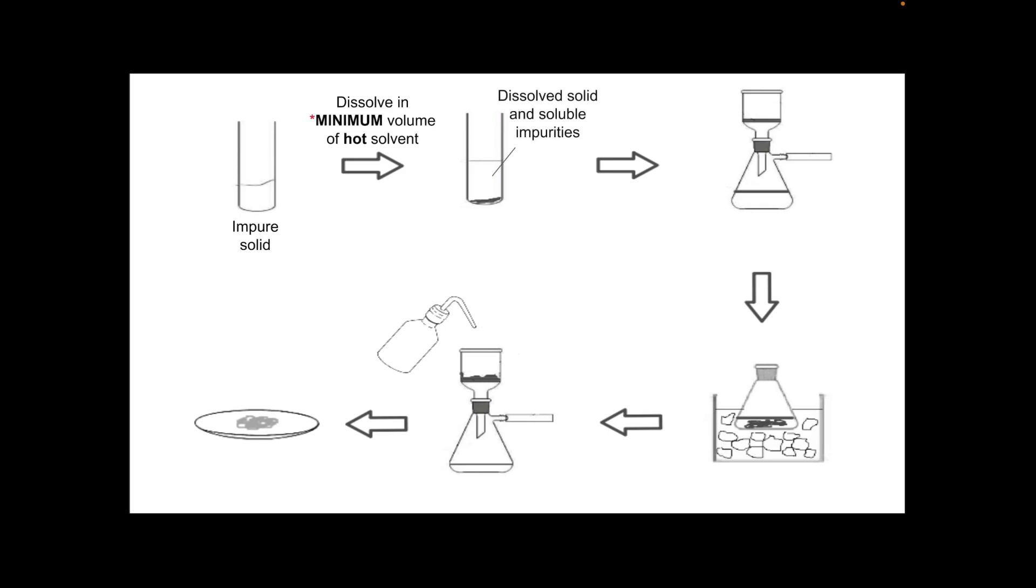That would generate your dissolved solid and any soluble impurities. You'll notice a little bit of solid at the bottom of the tube there, they would be your insoluble impurities. We need to separate those from each other and we do that by filtration, using reduced pressure filtration or Buchner apparatus. But we need to do that while everything's still hot.